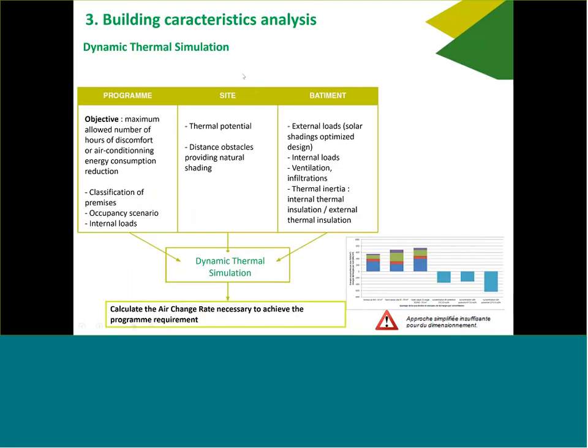What we found is that if you want to size ventilative cooling like an engineer, you need to go through a dynamic thermal simulation. To do your dynamic thermal simulation, you start from your program: what is the number of hours I allow of discomfort, and what is the level — is it 27 or 28 degrees? We highly recommend targeting 28 degrees if the client is okay, because 27 degrees will really increase a lot the number of air changes per hour you will need. In a Mediterranean climate, 28 is much more manageable. In continental climate it could be very different — in some cases, one air change per hour is enough. Then you model the type of building: what is the occupancy scenario, all your internal loads, the thermal potential from the site.